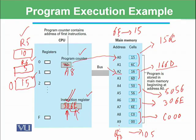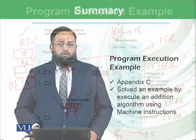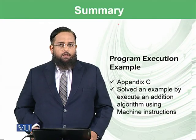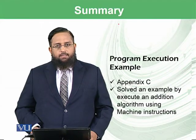The next instruction at A8 is C000, which means stop the program. In this example, we fetched two numbers from RAM at addresses 6C and 6D, moved them into registers R5 and R6, performed addition, and stored the result back into RAM at address 6E. This concludes today's module, where we performed a real-time example of how a program actually executes within the computer.